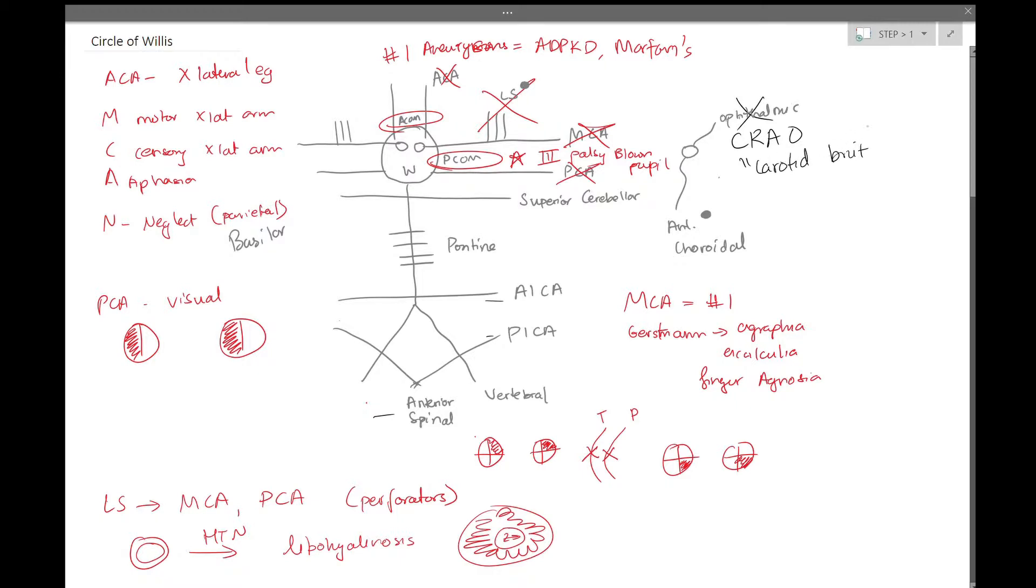Question stems will generally include something about a carotid bruit, and potentially the fundoscopic exam will say a cherry red spot. This is not the only condition that presents with cherry red spots. However, if you're thinking of a stroke, monocular vision loss, cherry red spot on the fundus exam along with carotid bruit, think of something like Central Retinal Artery Occlusion.